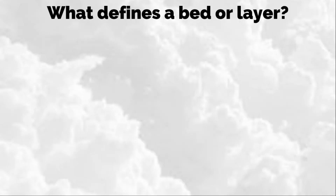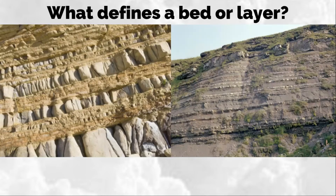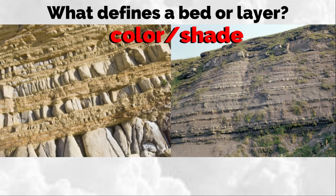So what defines a bed or a layer? How do you distinguish one bed from another? In this figure, the beds are clearly defined by a change in color or shade. A change in color can reflect differences in grain size and composition.